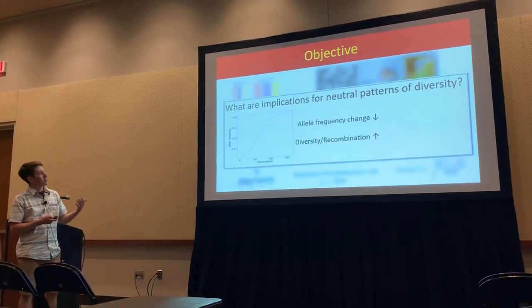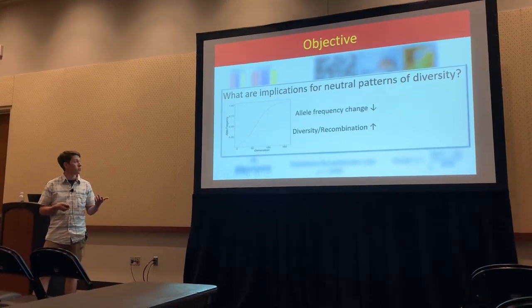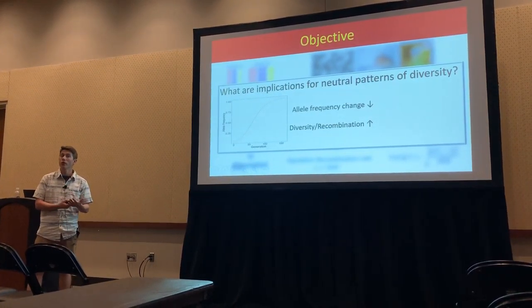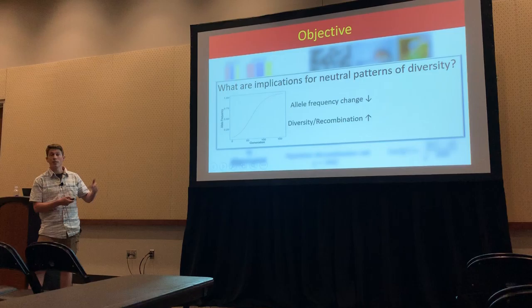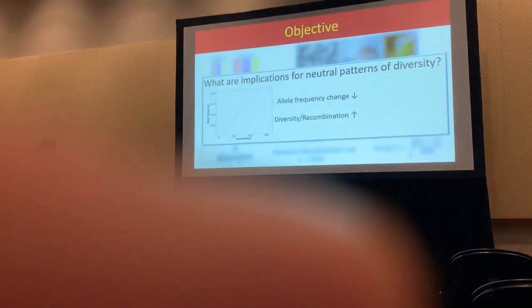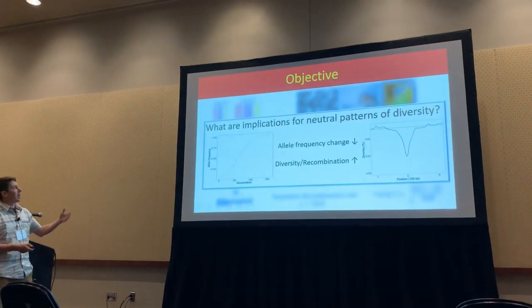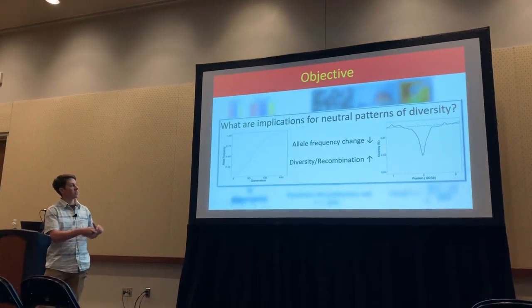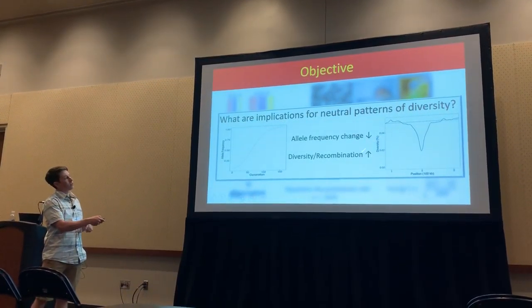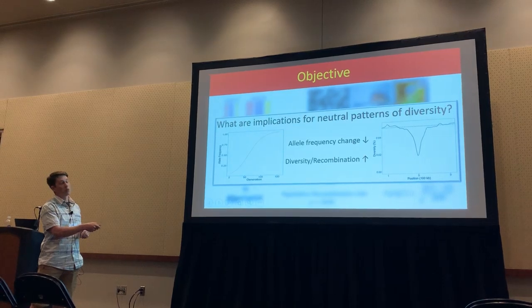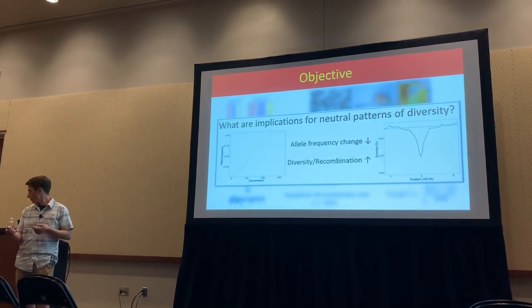So there are several things going on here. Rates of neutral and non-neutral allele frequency change are going down. Diversity and recombination are going up. And the question becomes: how does all of this funnel through the process and reflect patterns of neutral diversity around the region that is starting to fixate?